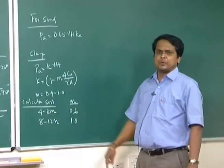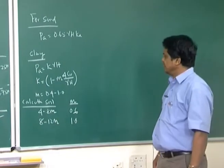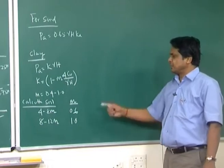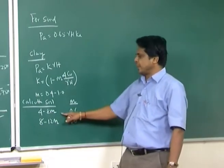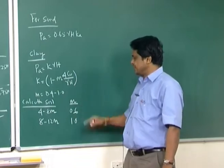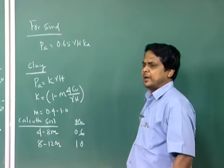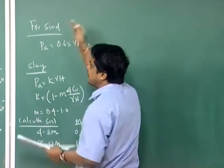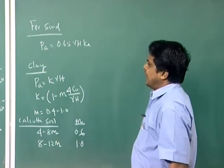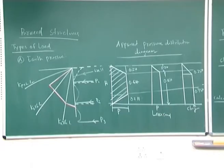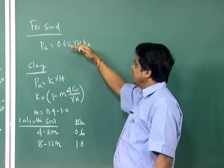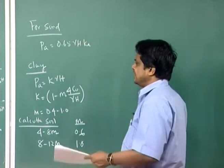The m value is varying from 0.4 to 1.0. Based on different cities and different soils, this m value varies. For example, for Calcutta soil with depth of excavation 4 to 8 meters, m value is 0.6; for 8 to 12 meters, m value is equal to 1.0. This is about the earth pressure distribution diagram and from there the apparent pressure distribution diagram, giving the pressure coming on the strut for sand and clay.